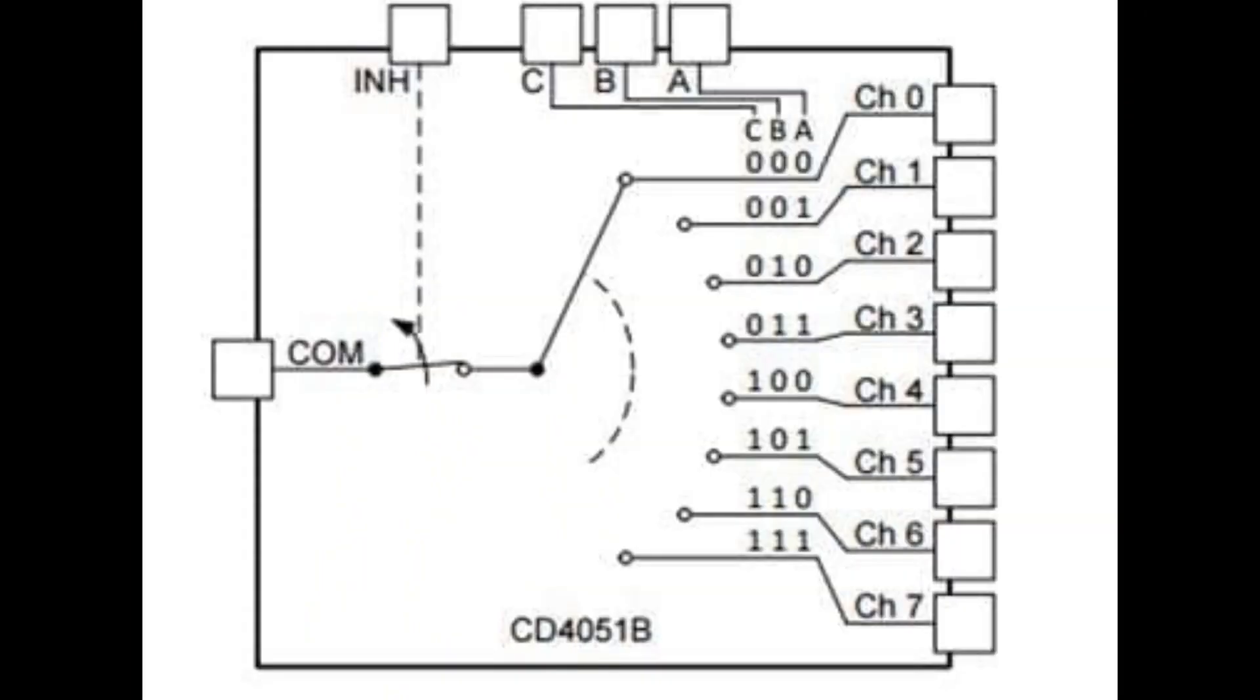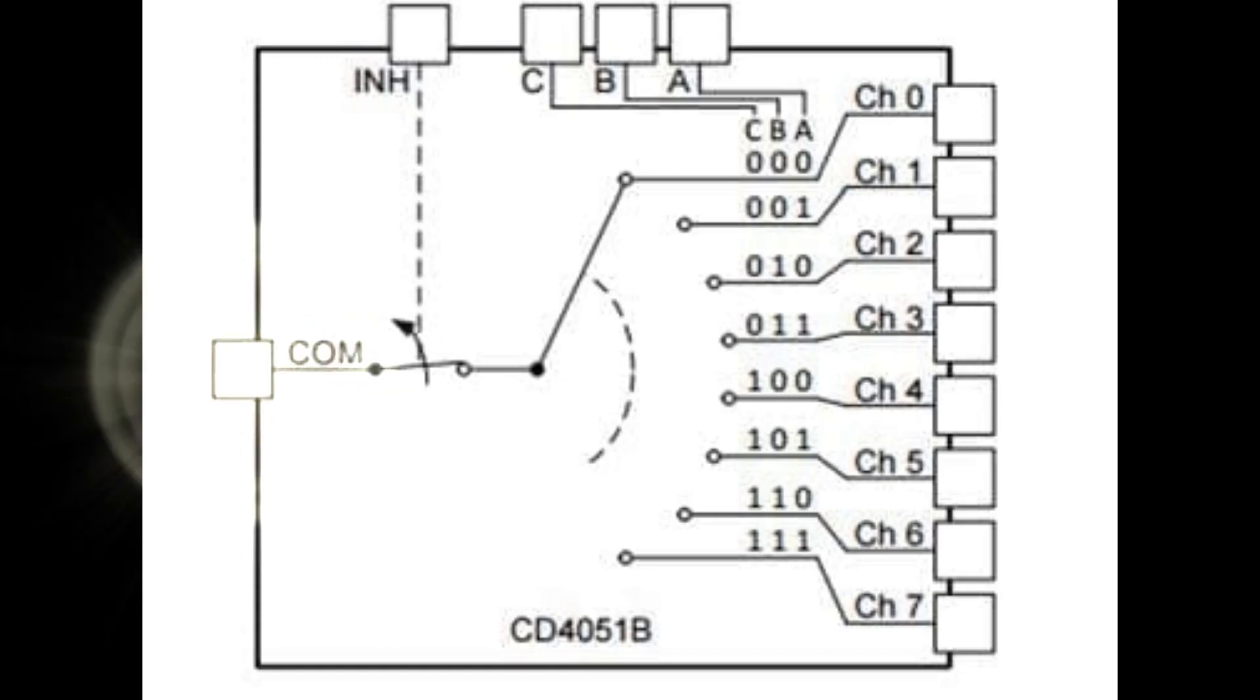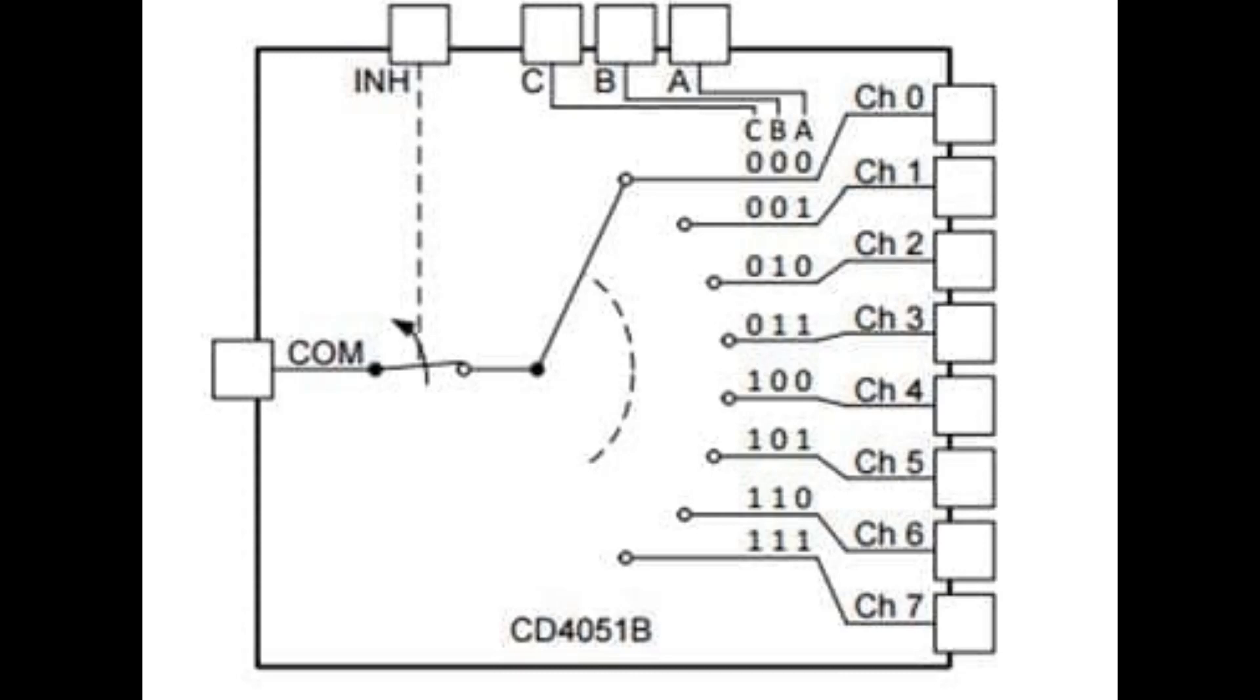Alright so to explain how this works. The common there is the connection that is going to pin two on the Arduino, the one with the hardware clock on it, the hardware trigger. Now you can see the CB and A up there. This is what's known as a BCD, a binary coded decimal block. So as they are engaged or disabled it will switch the feeds between the different channels. Now as you'll see this chip is capable of eight channels, but I'm only using the first six.